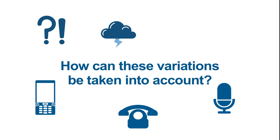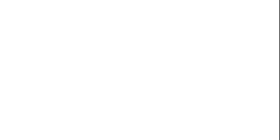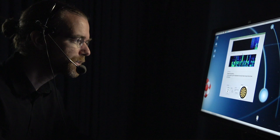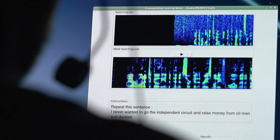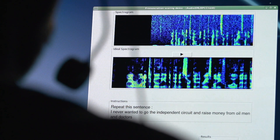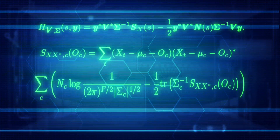Then how can these variations be taken into account to authenticate someone with precision? CRIM researchers introduced a mathematical approach that solved this problem: Joint Factor Analysis.